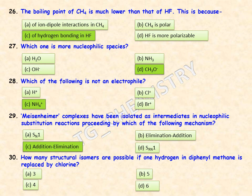How many structural isomers are possible if one hydrogen in diphenylmethane is replaced by a chlorine atom? The right answer is option C — four structural isomers are possible in that case.